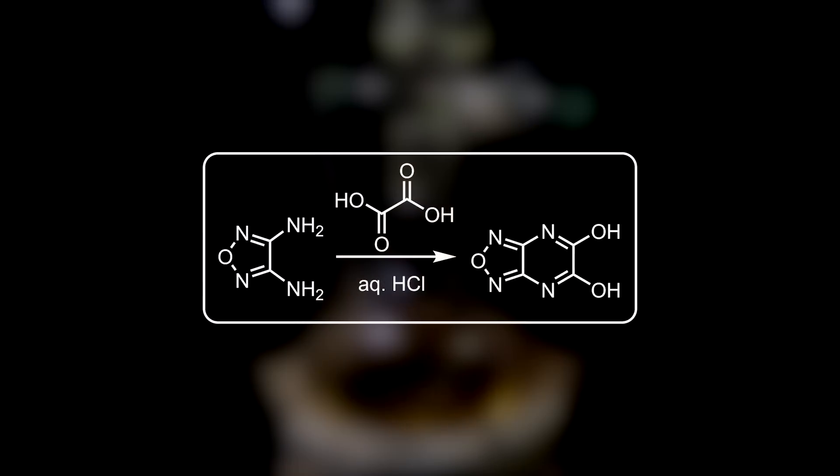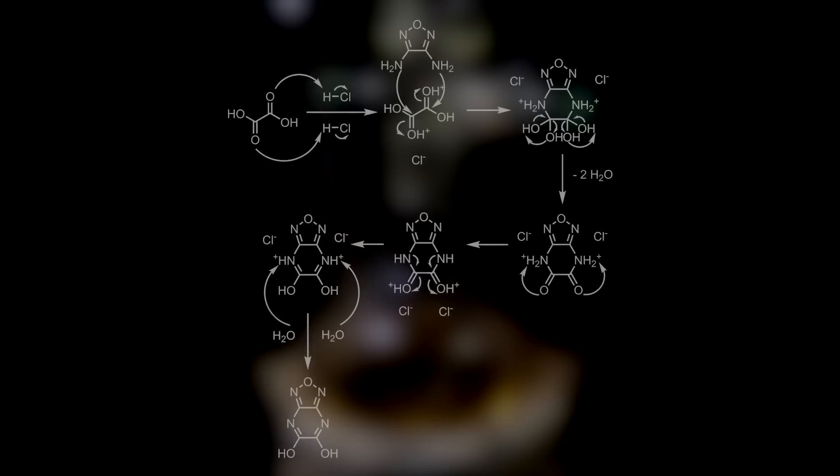In this reaction, 3,4-diamino-furozan reacts with oxalic acid, catalyzed by a strong acid to form the corresponding dihydroxypyrazine. The way it proceeds is first through protonation of the oxalic acid, carboxylic acid carbonyls.